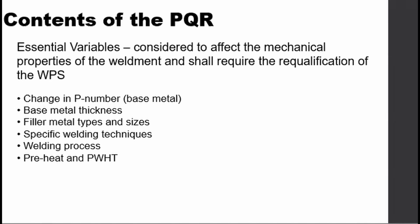Typical essential variables also depend on the welding process — it's not the same for everything. For example, SMAW, or shielded metal arc welding, does not require a shielding gas, so you should not expect shielding gas to be an essential variable.